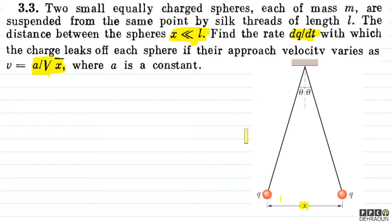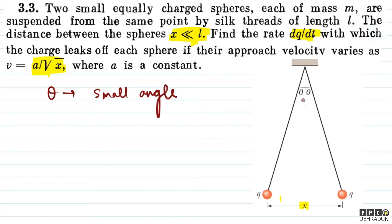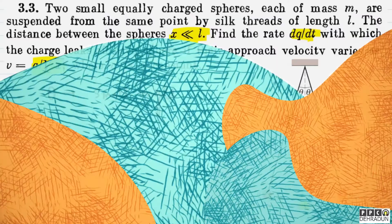We need to find this approach velocity which is a function of x. It will be a small angle — अब देखिए बच्चों, हम लोग इन दोनों spheres को almost equilibrium मान सकते हैं। यहाँ पर यह दोनों approach तो कर रहे हैं लेकिन theta पहले से बहुत छोटा है और बहुत slight changes आ रहे होंगे, तो इसलिए हम लोग almost मान सकते हैं कि यह दोनों spheres हमेशा equilibrium में रहेंगे।